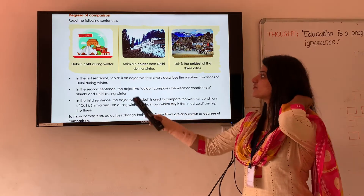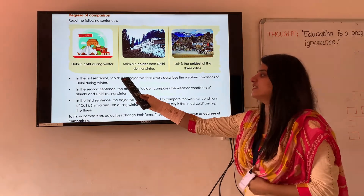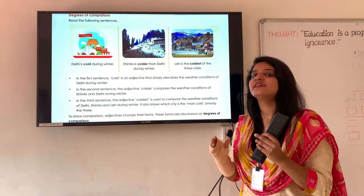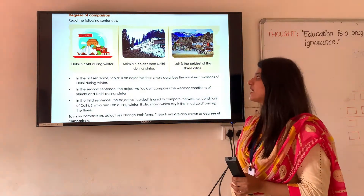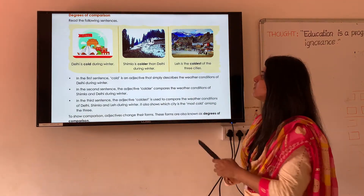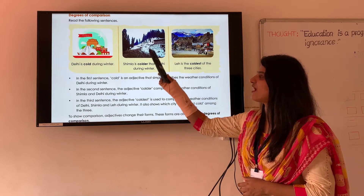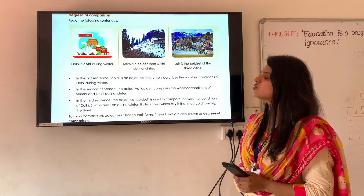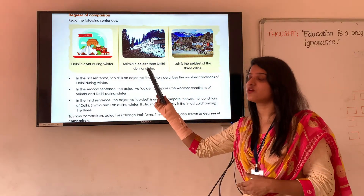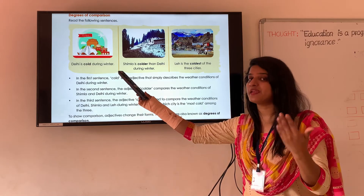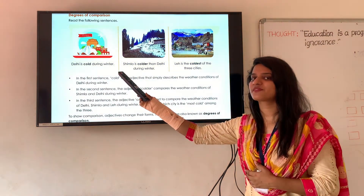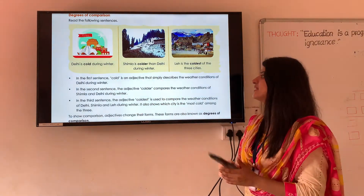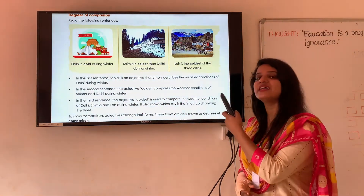Can you see this picture? This picture is of Delhi. What is mentioned in the sentence? Delhi is cold during winter. Next is about Shimla. As you can see there is a lot of ice here — a lot of snow which has fallen on the ground, on the rooftops, on the trees. So which place is having more cold? This place. So the word we use is 'colder.' Shimla is colder than Delhi.